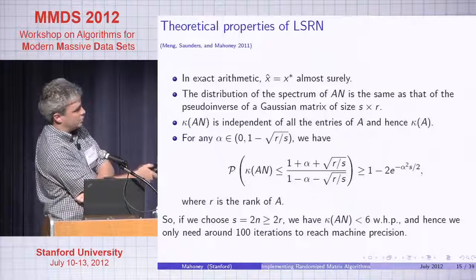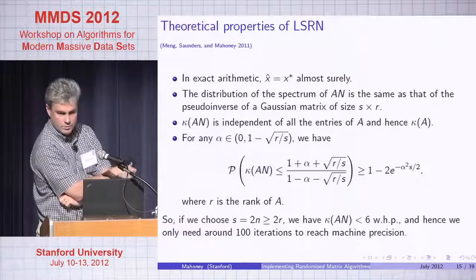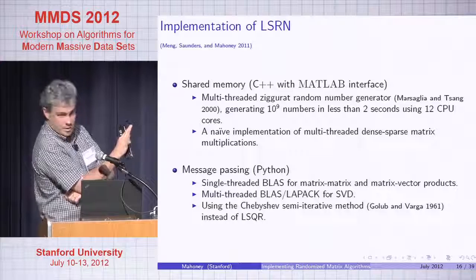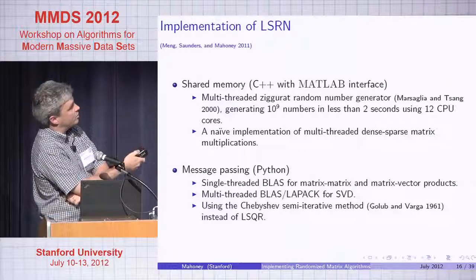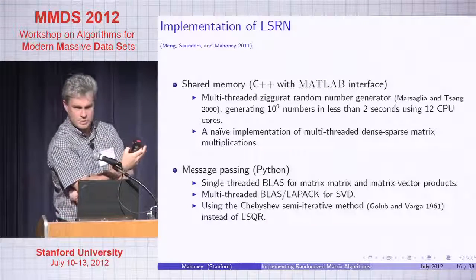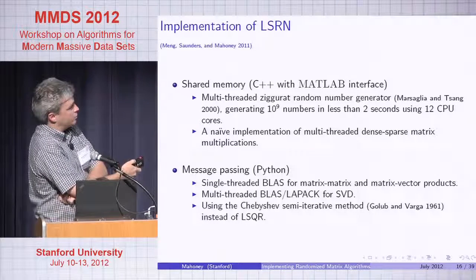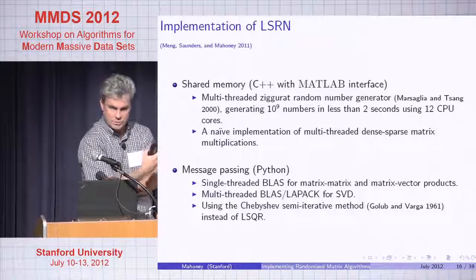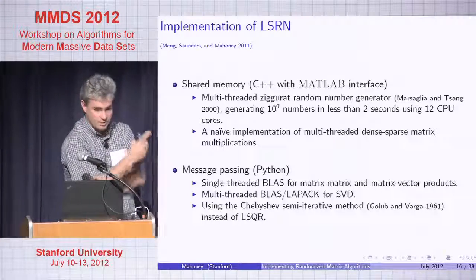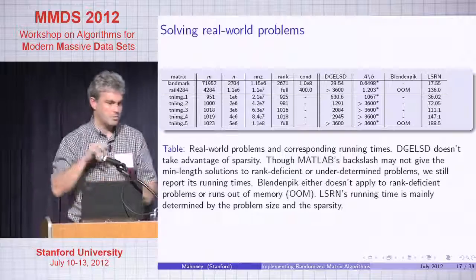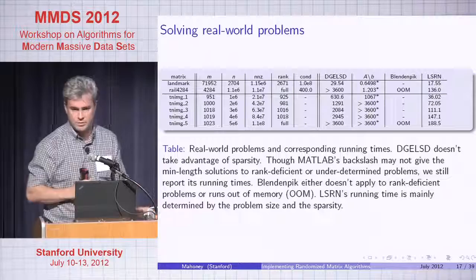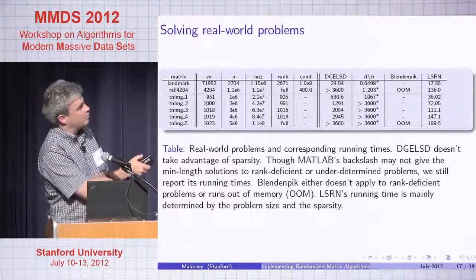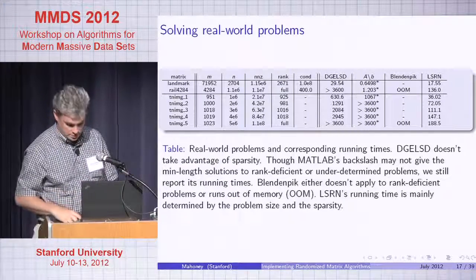We have implementations in shared memory with a C++/MATLAB interface and a non-trivial random number generator — actually the most expensive part if you're not careful. Also a message-passing interface with Python, single-threaded BLAS for matrix-matrix and matrix-vector products, and multi-threaded BLAS/LAPACK for SVD. On real-world problems, LSRN is marginally slower than blend-and-pick on tall dense matrices, but faster on other cases involving rank deficiency, larger matrices, or sparsity. On benchmarks designed to illustrate where LAPACK or MATLAB's blend-and-pick perform well or poorly, LSRN does well in RAM.